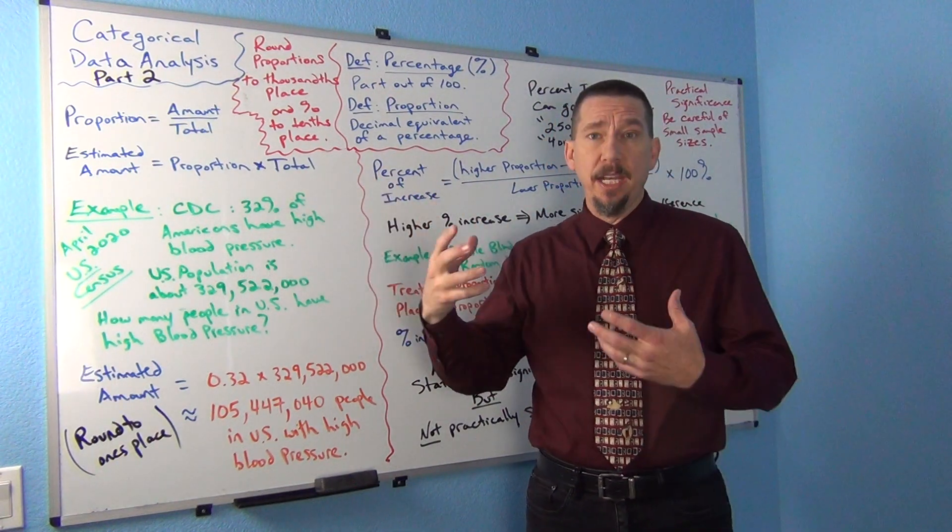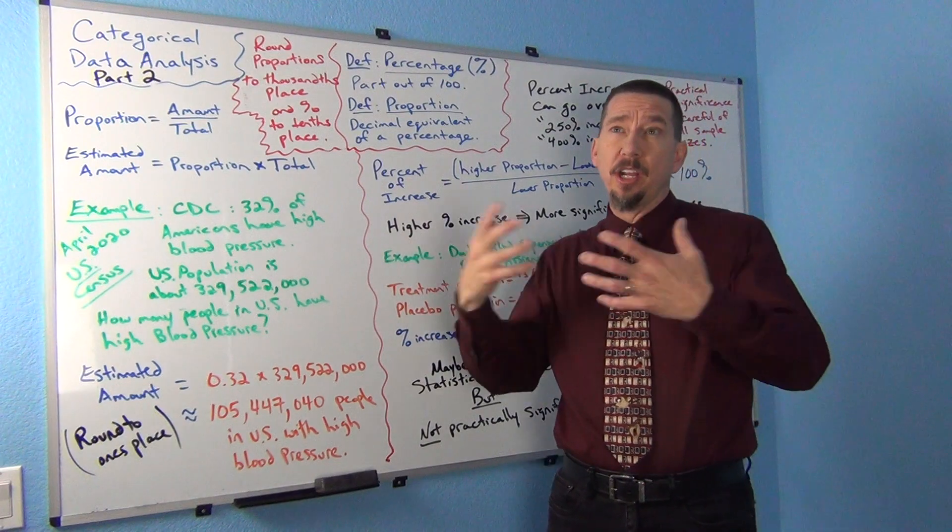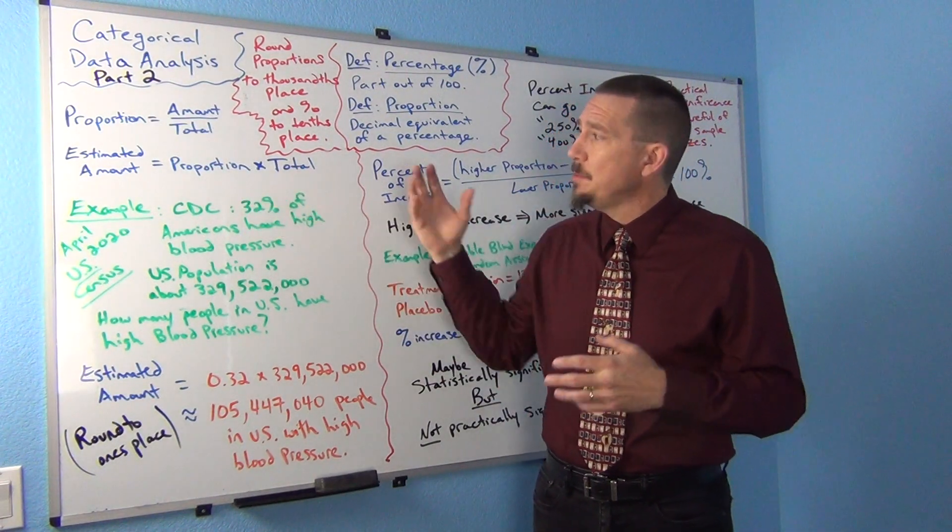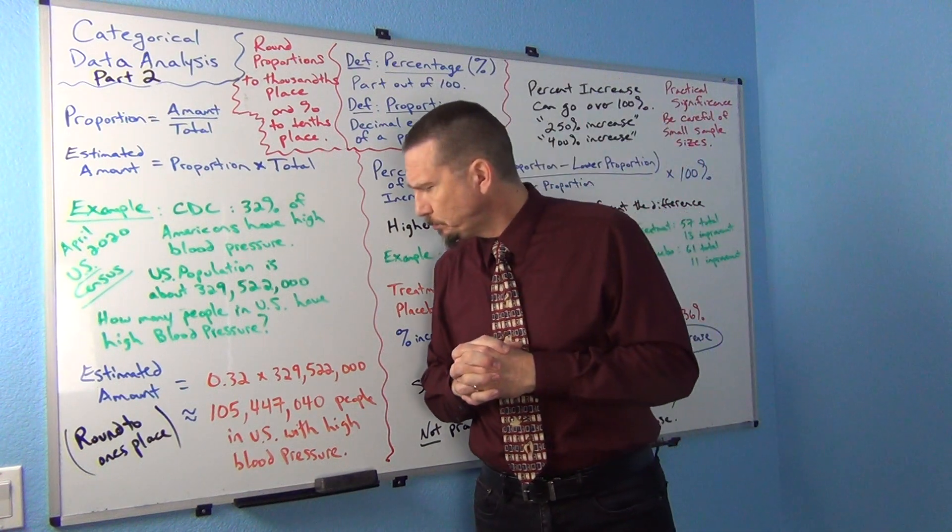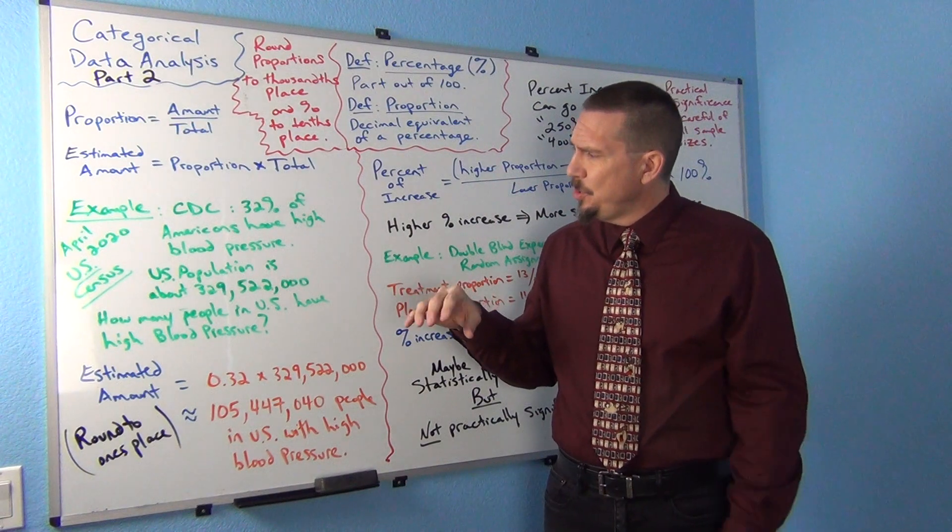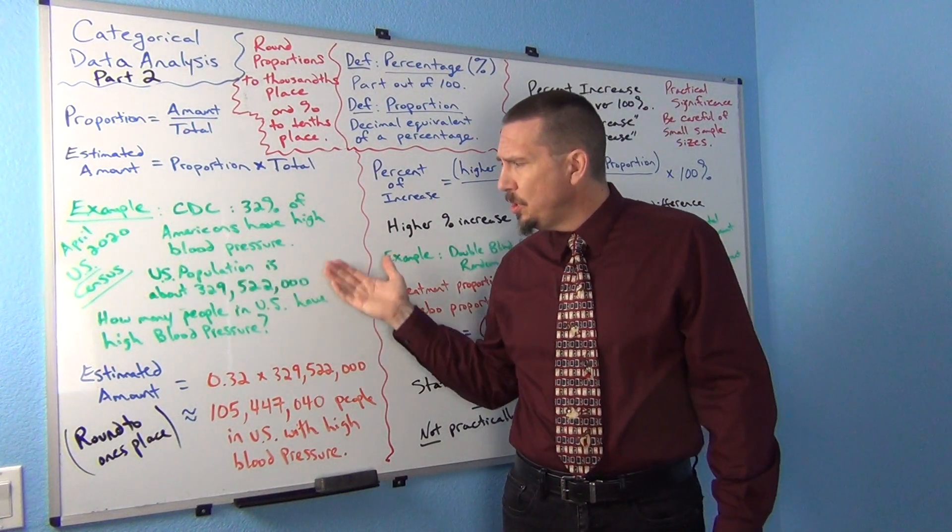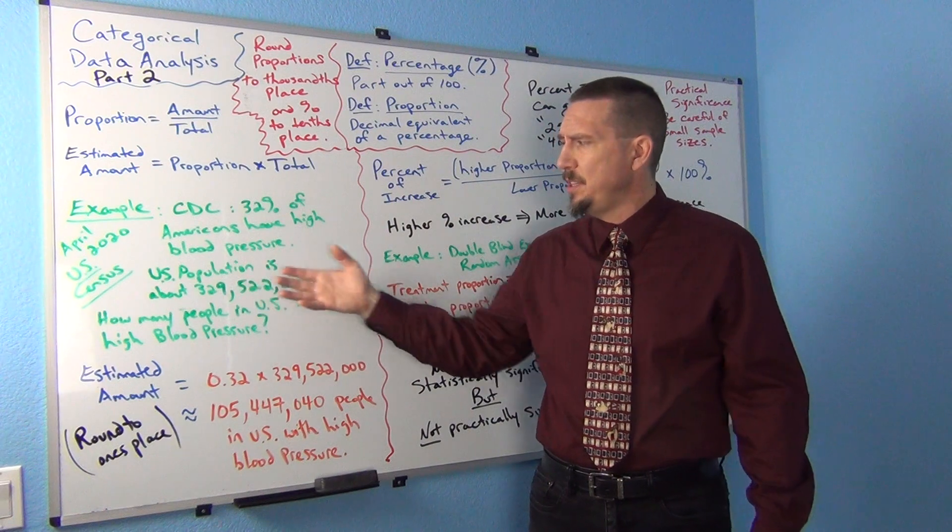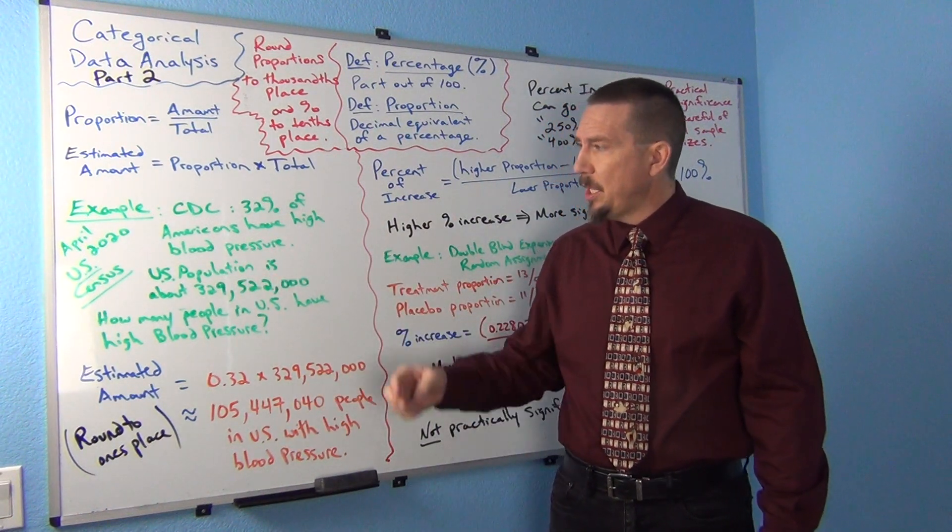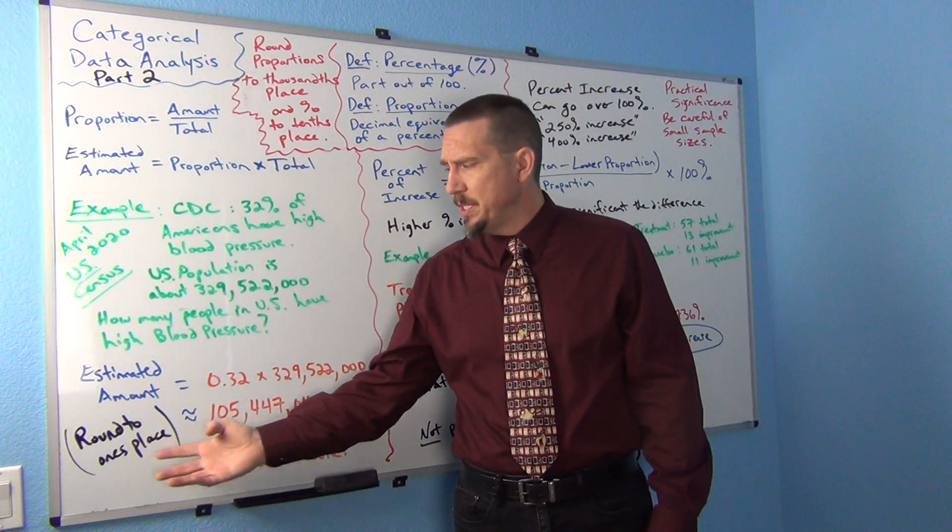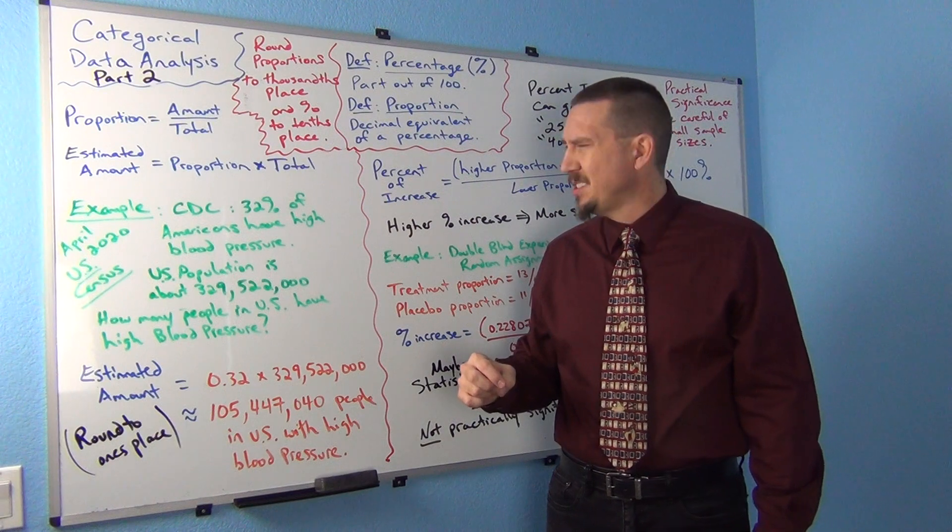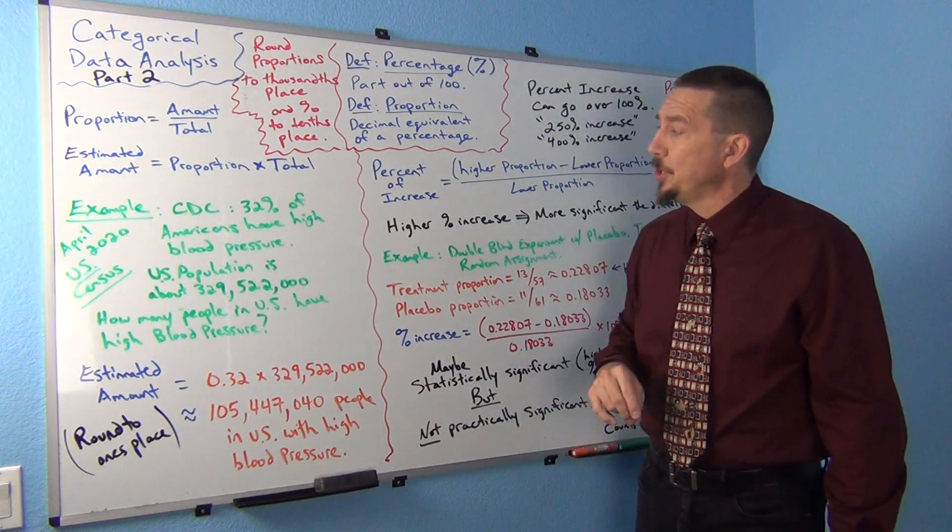Businesses use them all the time for estimating how many of their customers have certain characteristics. So this proportion times total is actually a pretty famous formula. By the way, usually you round to the accuracy of your total. Like if you kind of think of if my total was in the millions, I'd probably round this to the millions. A lot of times if it's a smaller population, you might round to the ones place. That's sort of sometimes common, depends on the problem. But I hope that's helpful for you.